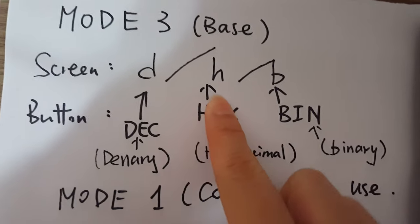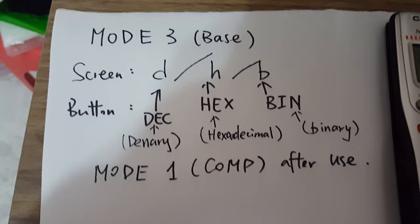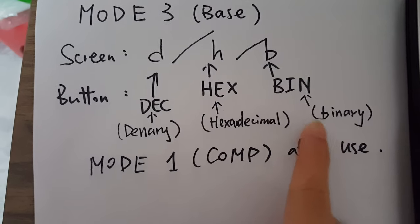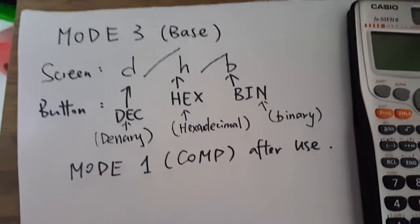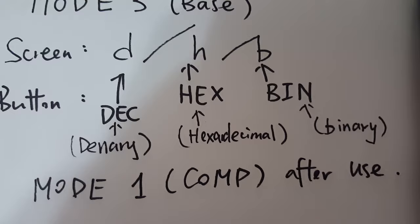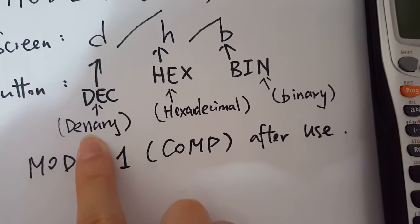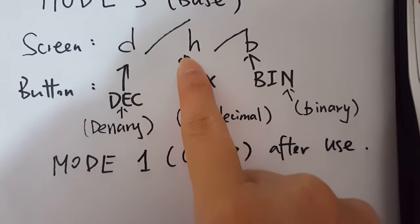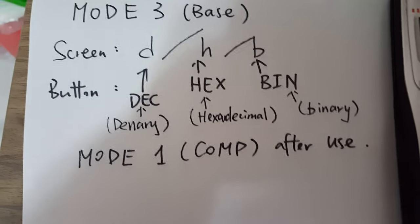The calculator will show either D, H, or B. Do you remember in the notes I asked you to fill in the blanks and write down once? It's used to help you remember the meaning of each vocab. Of course, you don't have to spell the words, but at least you know that D stands for denary, H stands for hexadecimal, and B stands for binary.